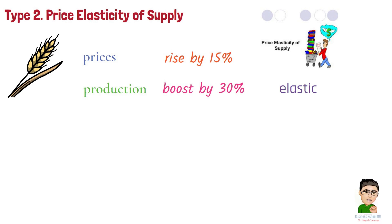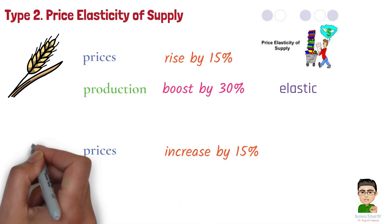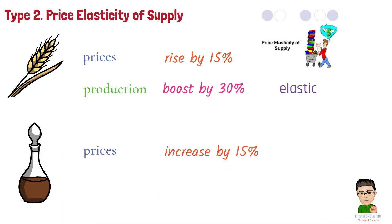However, if a 15% price increase for vintage wine leads to only a 5% rise in supply, the supply is inelastic, indicating production constraints that limit quick adjustments.